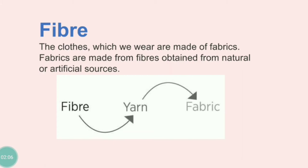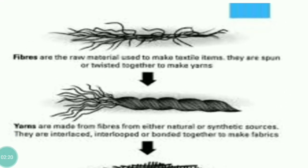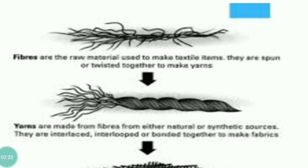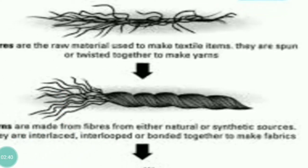Fiber. What is fiber? Fiber is the raw material which is used to make textile items, as you can see in the first figure. Thread-type structures are termed as fibers. These fibers twist together to give yarns, as you see in the second figure. So fibers combine together to form yarns.